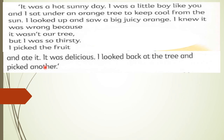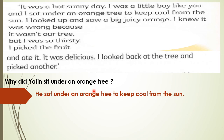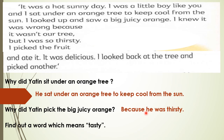Now let's answer some questions. Why did Yatin sit under an orange tree? He sat under an orange tree to keep cool from the sun. Next question: Why did Yatin pick that big juicy orange? Because he was thirsty — لأنه كان عطشاناً. Find a word which means 'tasty.' The answer is 'delicious.'